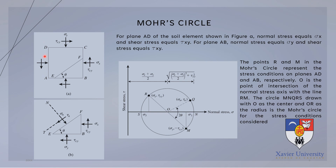For plane AD, the normal stress equals sigma-x and the shear stress equals tau-sub-xy. For plane AB, the normal stress equals sigma-y and the shear stress equals tau-sub-xy. Points R and M in the Mohr's Circle represent the stress conditions on planes AD and AB respectively.